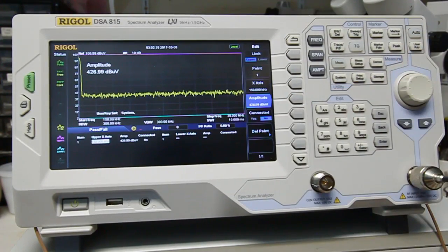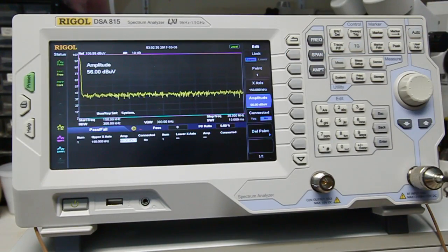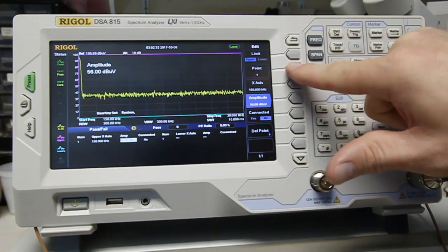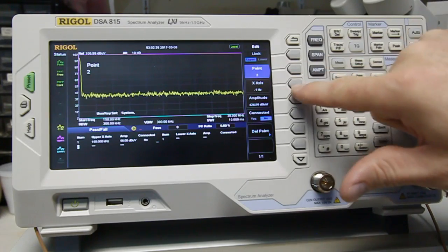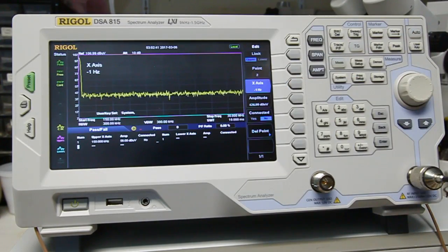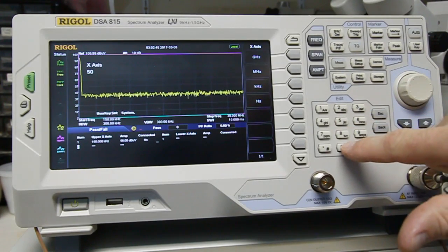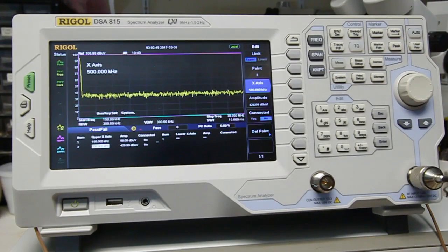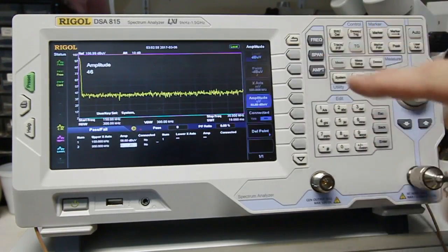And our amplitude that we start out at, we're going to be looking at the average limit. So this is 56 dB microvolts. So we've got our first point in. We're going to go to our second point. The second point of the specification is 500 kilohertz. And it should drop down to 46 dB microvolts at this point.